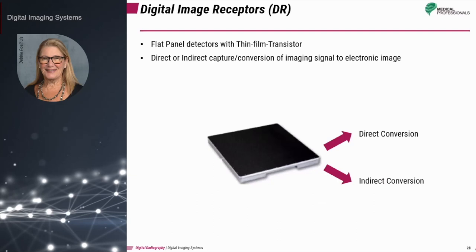DR imaging systems have, in many cases, eliminated the need for cassettes to be carried from place to place and have overall reduced the number of steps required in the entire imaging chain. DR technology utilizes flat panel detectors with thin film transistors in both direct and indirect digital systems.